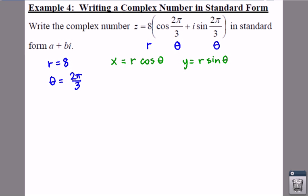Then what we do is we just pop these numbers in, and we're going to say x equals your r, which is an 8, times the cosine of - take out your theta and you plug in 2π over 3.